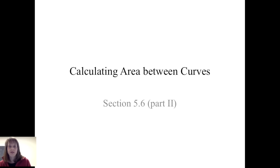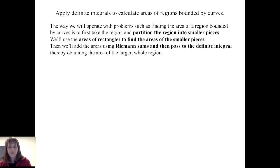In this video, we will continue our discussion of using the definite integral to specifically calculate the area between curves. When we proceed with these problems, such as finding the area of a region bounded by curves, we first take the region and partition it or slice it into smaller pieces. On each slice, we use areas of rectangles to find the areas of those small pieces. Then we add the areas of those rectangles using Riemann sums, and take the limit as the number of rectangles goes to infinity to pass to the definite integral, thereby obtaining the area of the larger whole region.